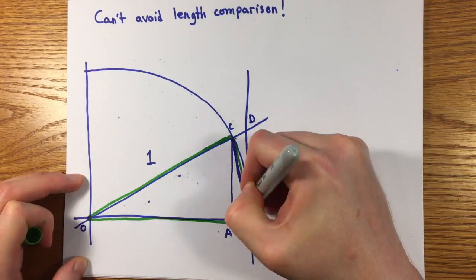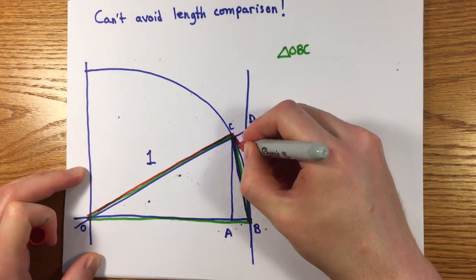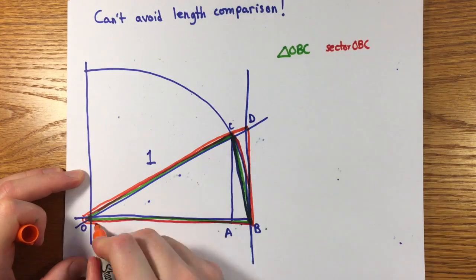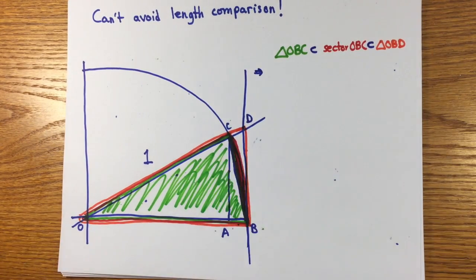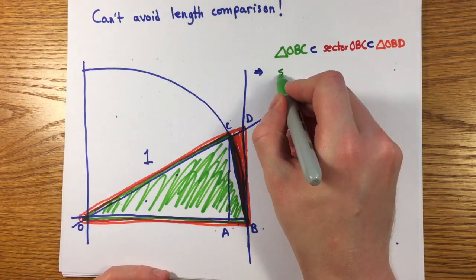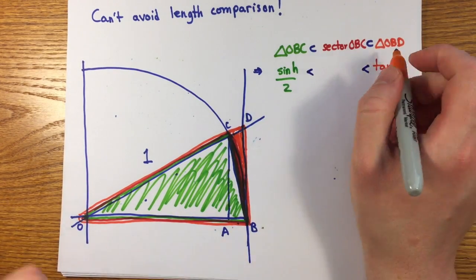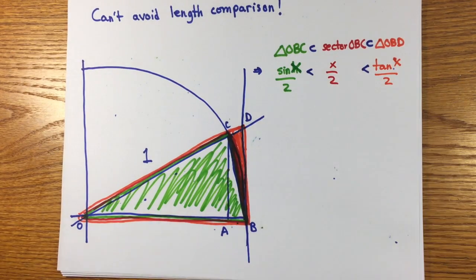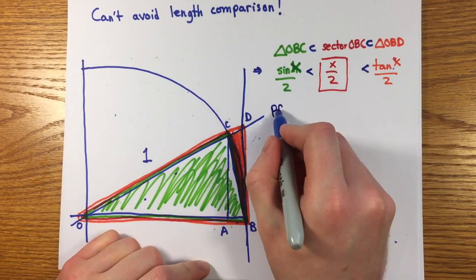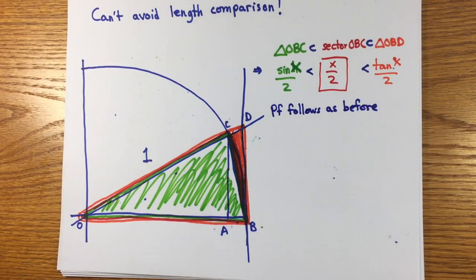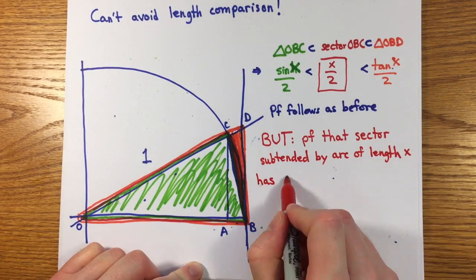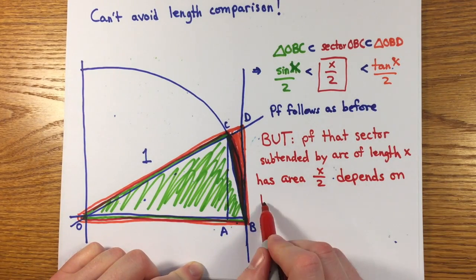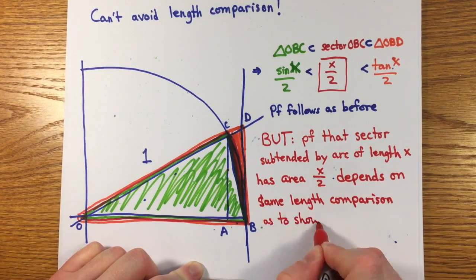And like I mentioned before, you can't avoid this problem by comparing areas of triangles in the sector as sine x over 2 is less than x over 2 is less than tan x over 2, because that proof requires knowing the area of a sector bounded by the arc of length x, which you can calculate if you know how the area of a circle relates to its circumference, but that's precisely the problem that Archimedes was trying to solve that required the proof of the length comparisons we're interested in in the first place.